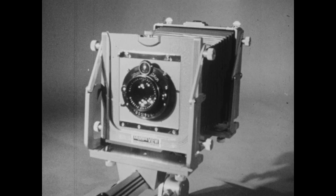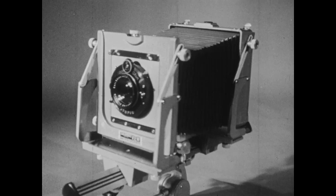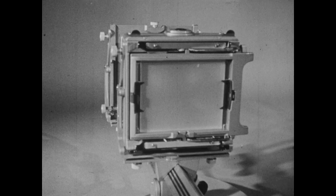We can use this simple basic camera to demonstrate some preliminary principles by which lenses function. Opposite the lens at the back of the camera is a ground glass. This enables us to see images which would be normally formed on film.